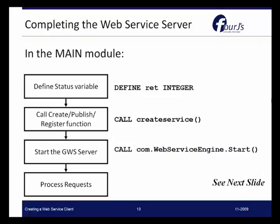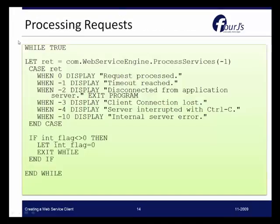To complete the web service server, in the main block of the program you need to define a status variable to return information on the status of the request, make a call to the create service function, and start the web services engine by calling the start method from the web service engine class. The code uses a while statement containing a case statement: a zero indicates the request was processed, with a couple of other options listed for other outcomes. Then there is standard interrupt flag checking to identify if an interrupt has been detected.